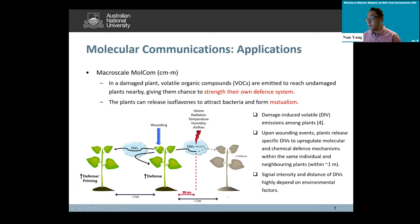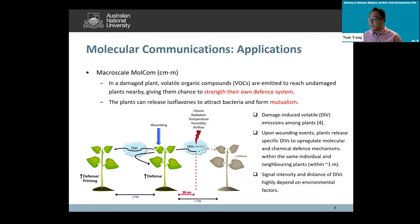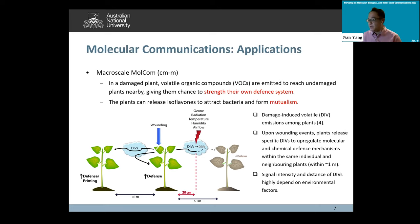Extending the scale, molecular communication also facilitates communication at the microscale, typically within centimeters to less than a meter. For example, in agriculture, a damaged plant releases volatile organic compounds to reach nearby undamaged plants, giving them the chance to strengthen their defense system. Plants can also release isoflavones to attract bacteria and form mutualism. Sensors deployed in this environment could facilitate this communication paradigm and improve the well-being of plants.